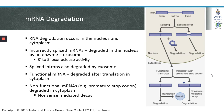RNAs can be degraded both in the nucleus and in the cytoplasm. In the nucleus, incorrectly spliced mRNAs can be degraded by an enzyme called the exosome. The exosome has 3' to 5' exonuclease activity. In addition to incorrectly spliced mRNAs, introns are also degraded by the exosome in the nucleus.